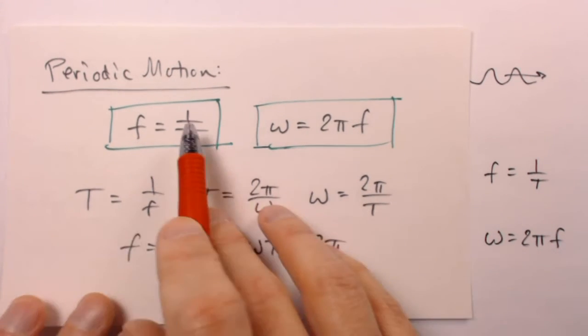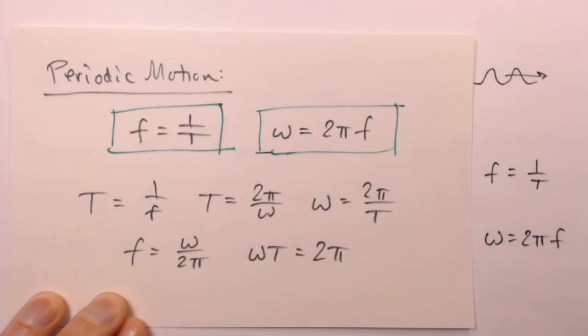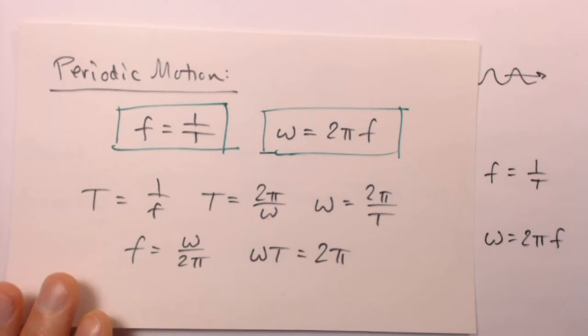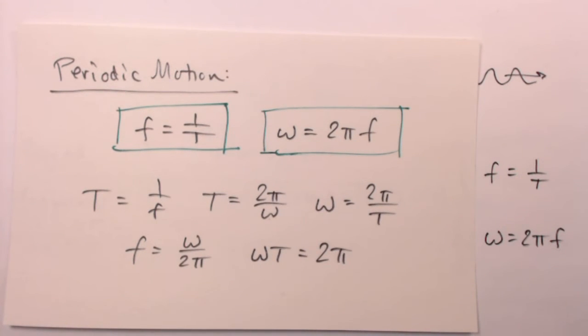If you don't care for these two equations, you can pick any two on this paper that you want. As long as you've got an f and a T and an ω in there somewhere, you can derive all of the others if you need them.